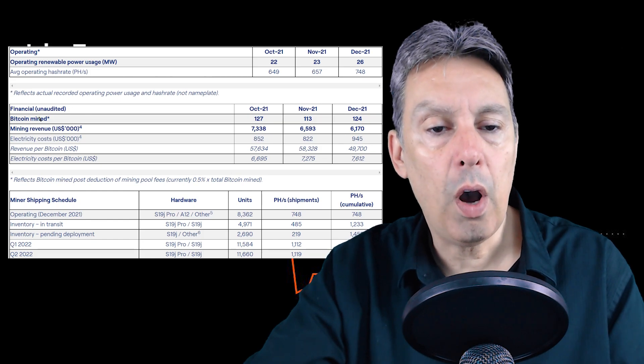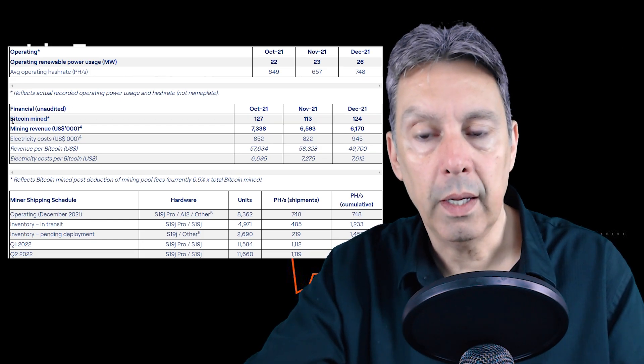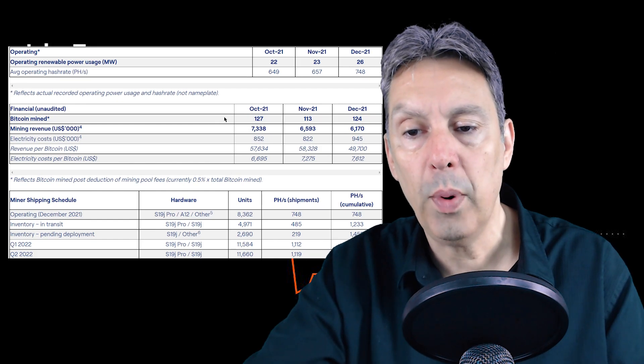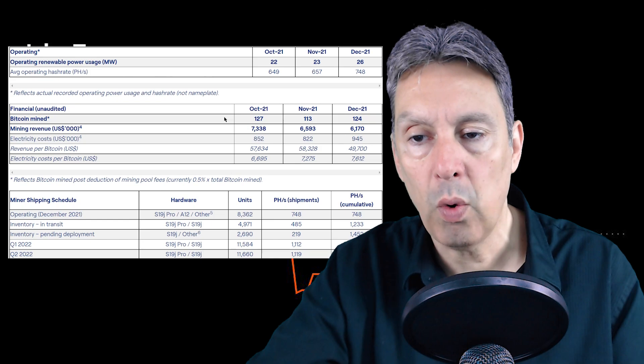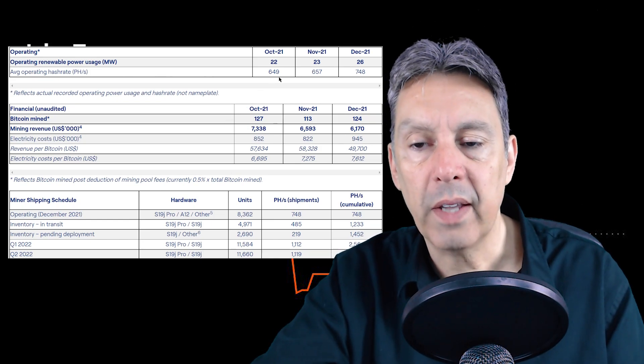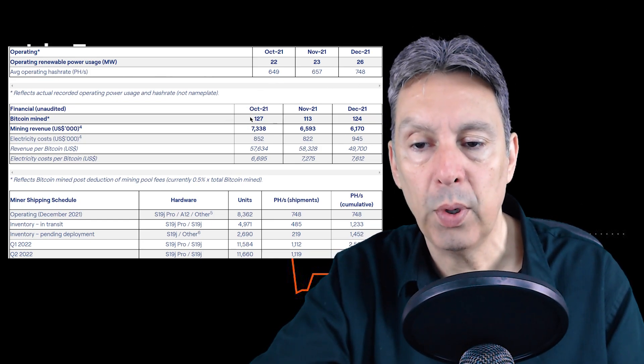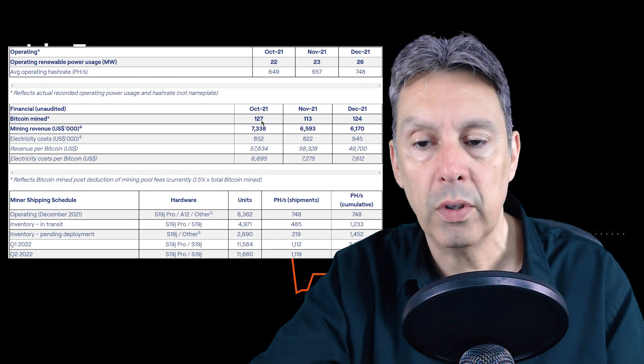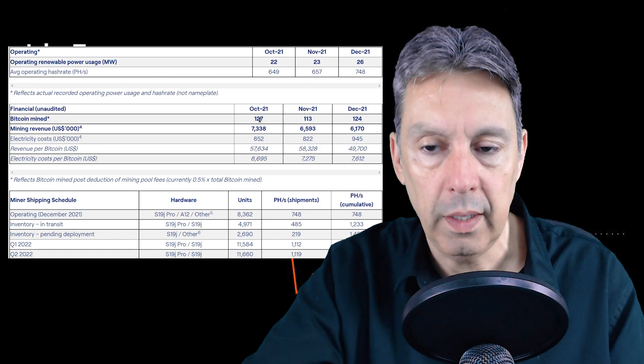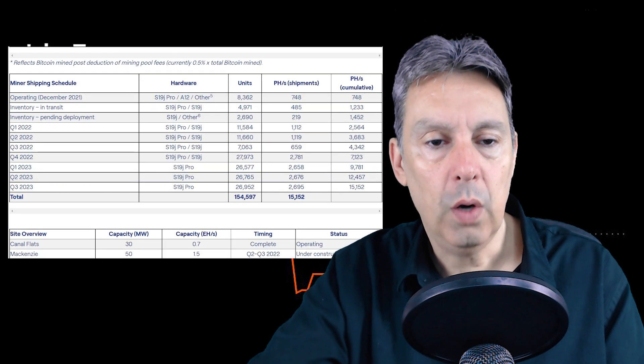Then they give their unaudited results on bitcoin mining. They mined 127 bitcoin in October, 113 bitcoin in November, and 124 bitcoin in December. So you see despite the fact that their hash rate went up a little bit, their production bounced around a little, and that is because the difficulty level continues to fluctuate for mining bitcoin.